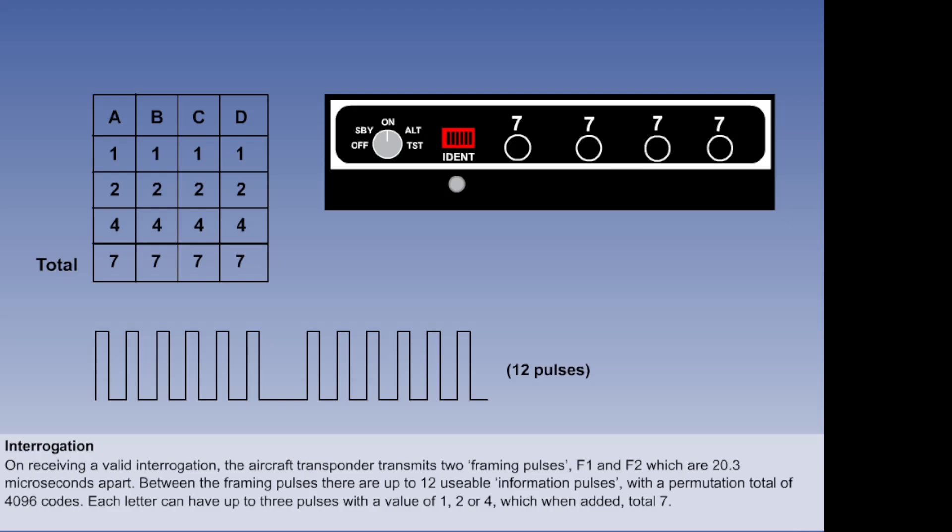7 is the highest number used in the transponder. So, all 12 pulses will only be used if the four numbers displayed are 7, 7, 7, 7. That is, 1, 2 and 4 are used four times. If the transponder number required was 5, 4, 3, 2, the number 5 would be made up of two pulses, A1 and A4. The 4 would be one pulse, B4. The 3 would be made up of C2 and C1. And the 2 would be one pulse, D2. This means that six information pulses would be used and the other six would be suppressed.